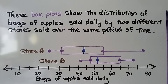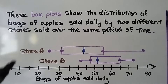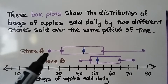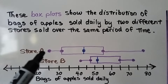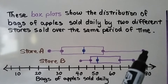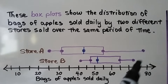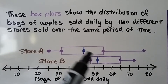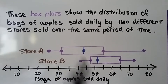These box plots show the distribution of bags of apples sold daily by two different stores over the same period of time. So we have store A and store B. We can see their least value, the minimum, and we can see their greatest value, their maximums. And we can see their median values in the middle here in the blue.